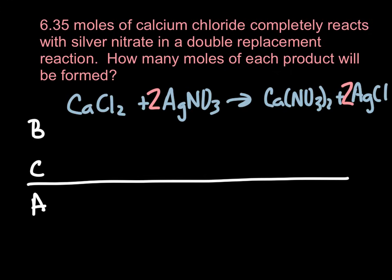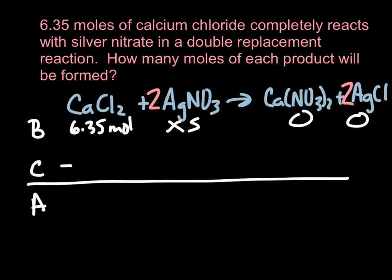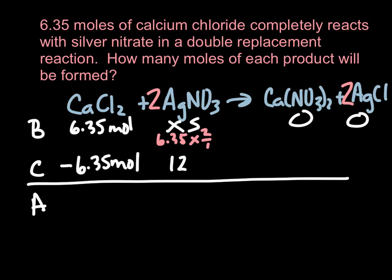Here is the balanced chemical equation and I've started my BCA table. We add to the before row: it says we started with 6.35 moles of calcium chloride, so I put 6.35 moles there. It doesn't say anything about silver nitrate, so I put excess, and zero moles for each product. I'm going to react the calcium chloride completely, losing those 6.35 moles. For silver nitrate: 6.35 times the ratio — I'm going to silver nitrate which has coefficient 2, coming from calcium chloride which is 1, so times 2 over 1 — that gives 12.7 moles used.